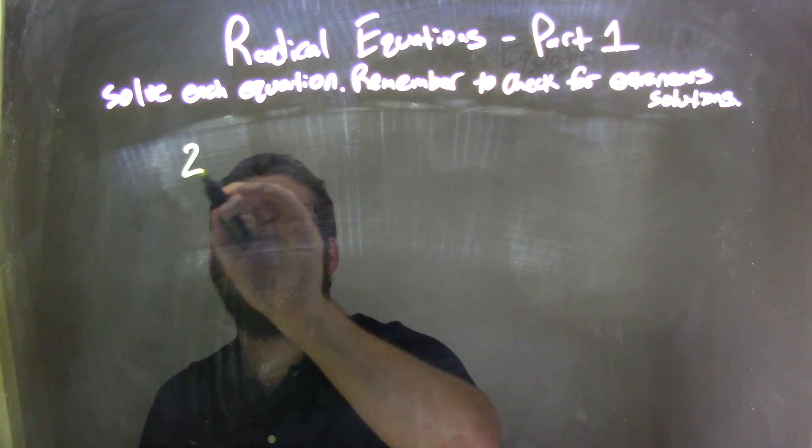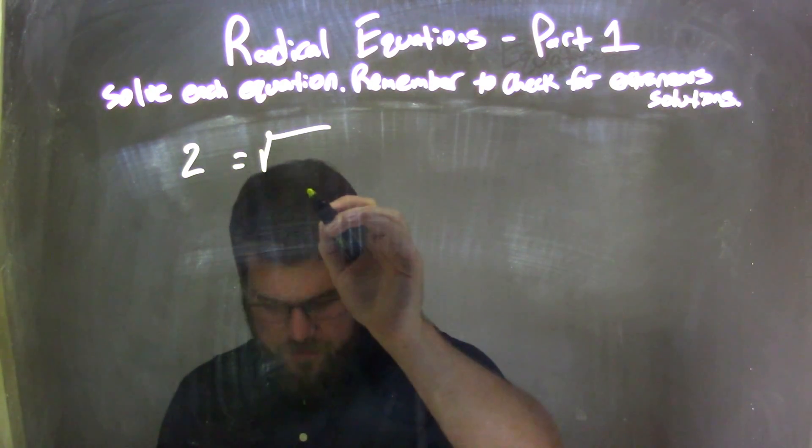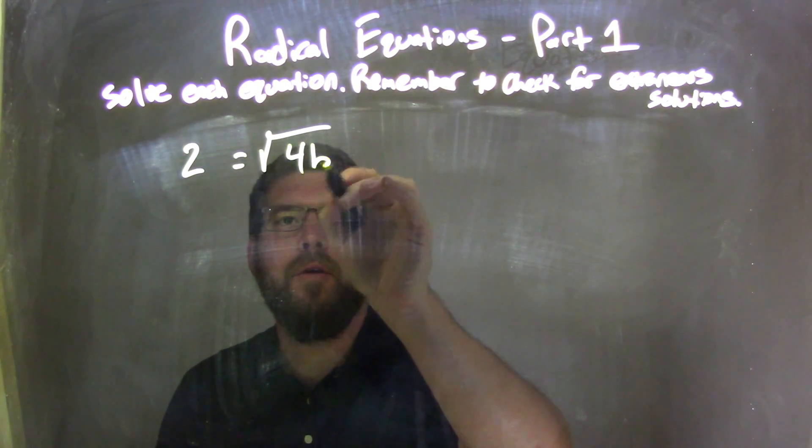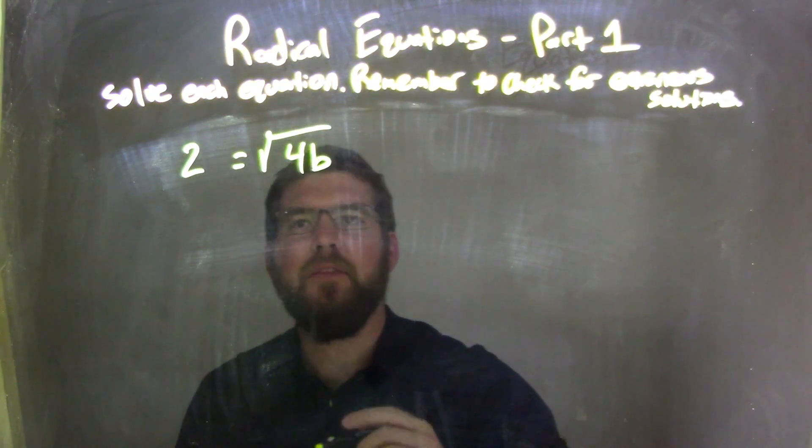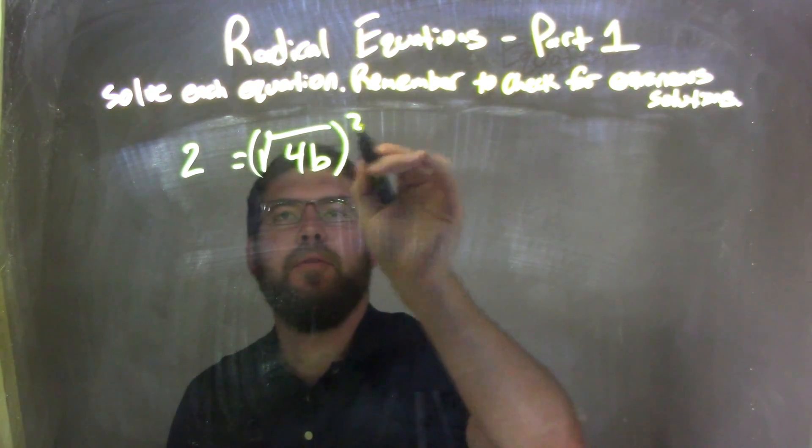So if I was given this equation, 2 equals the square root of 4b, well to eliminate the square root, I need to square both sides.